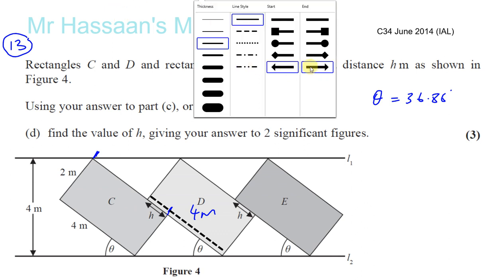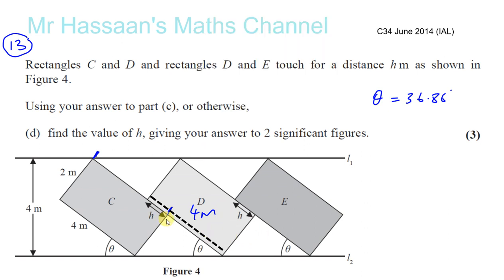The length from here to here, you can see, is going to be 4 minus H.